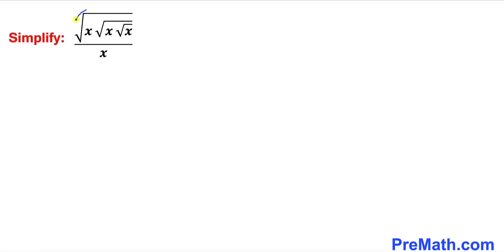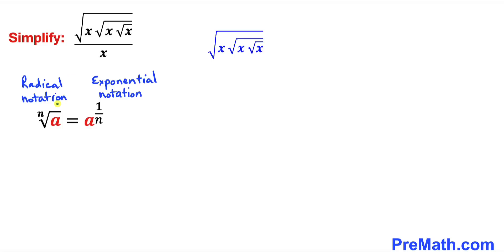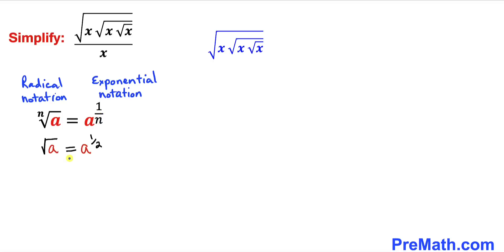Let's focus on the numerator part. This is our radical notation and this one is our exponential notation. The nth root of a can be written as a to the power 1 divided by n. For the square root of a, the index is 2 by default, so it can be written as a to the power 1 divided by 2. Therefore, the square root of x can be written as x to the power 1 over 2.